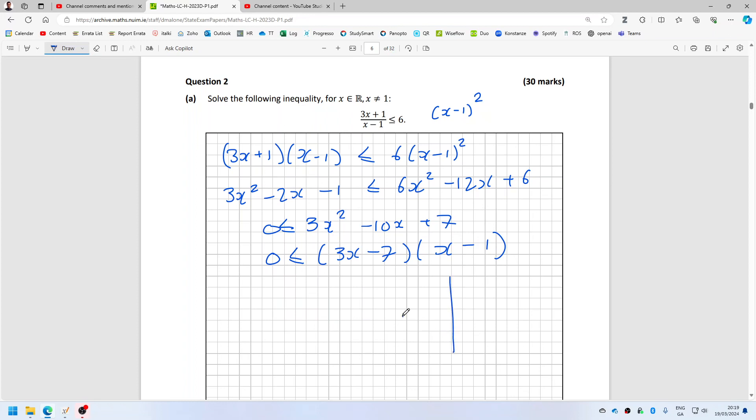Or if you want to just think about it as a solution that's 7 over 3 and 1. And we're in the region that's above 0, so that would be x has to be less than but not equal to 1 because you can't divide by 0, or x has to be greater than or equal to 7 over 3.